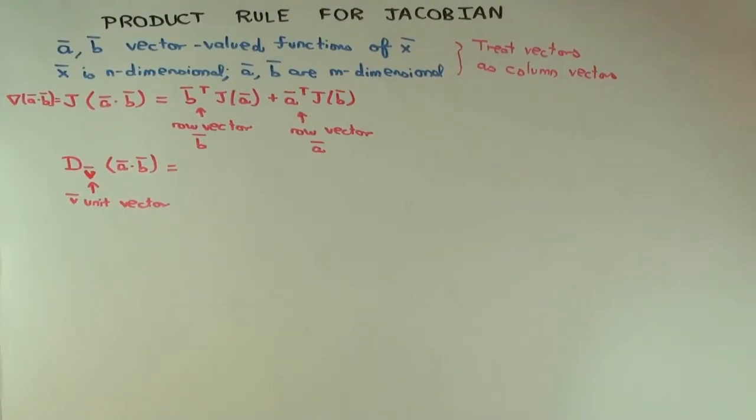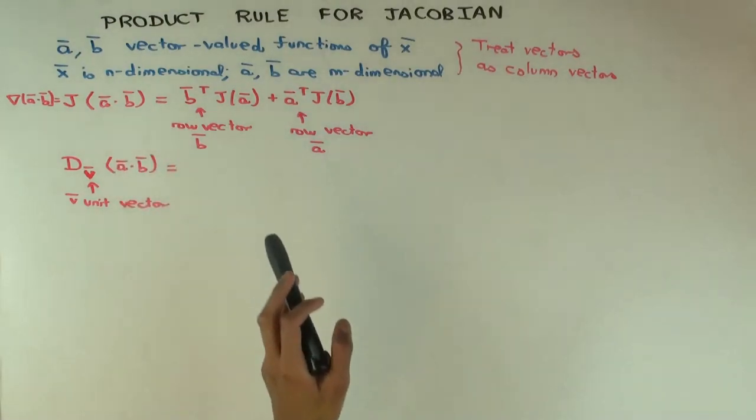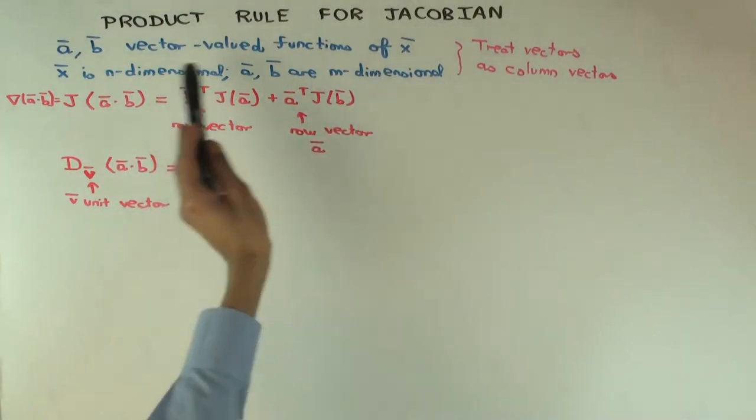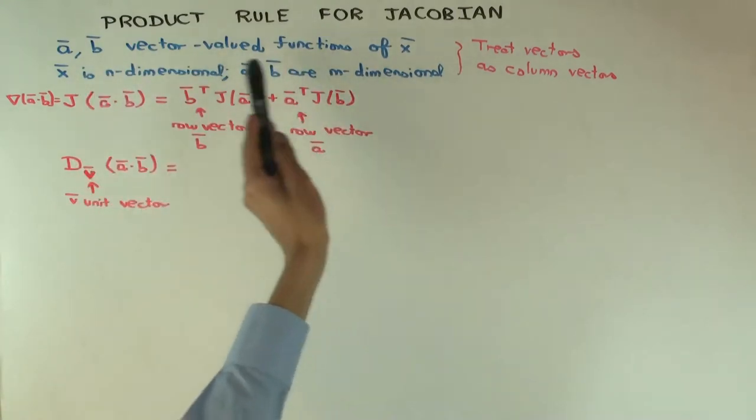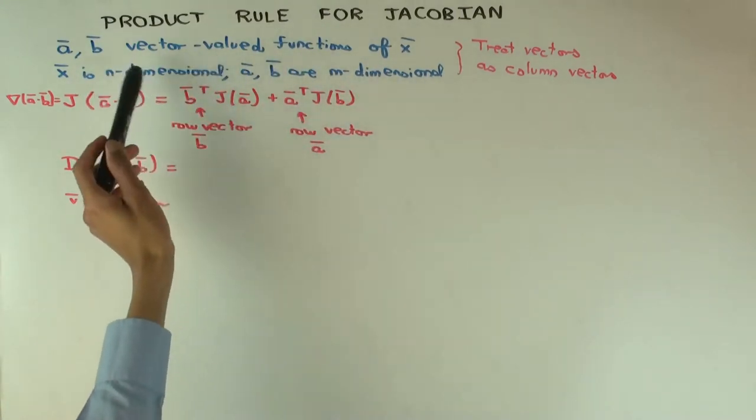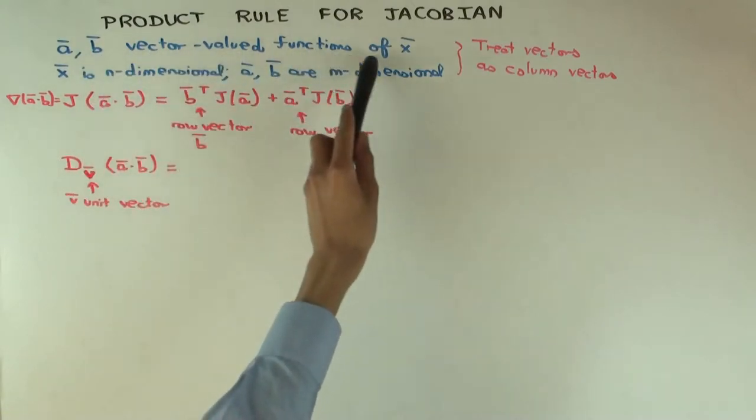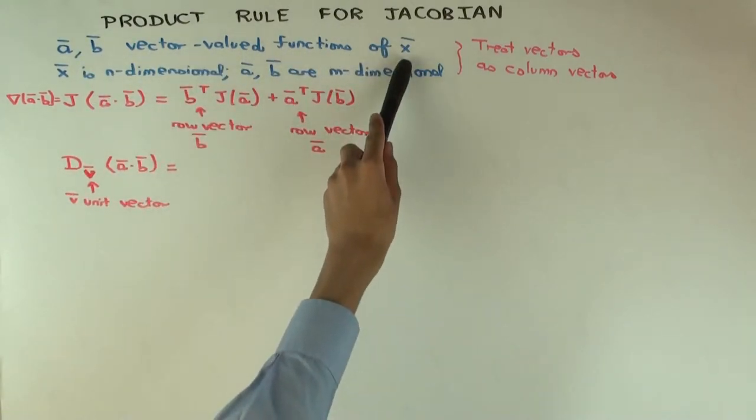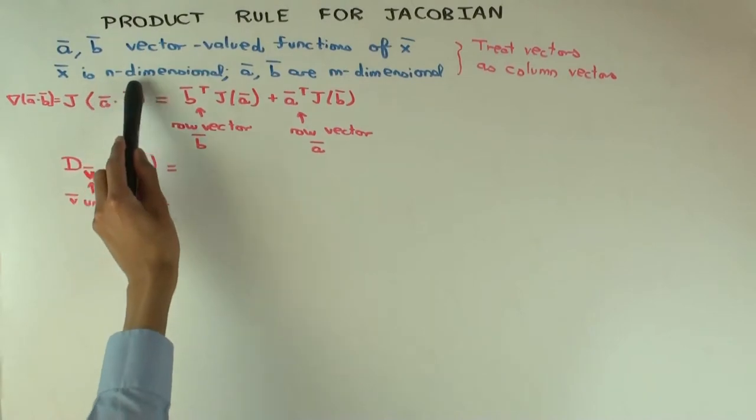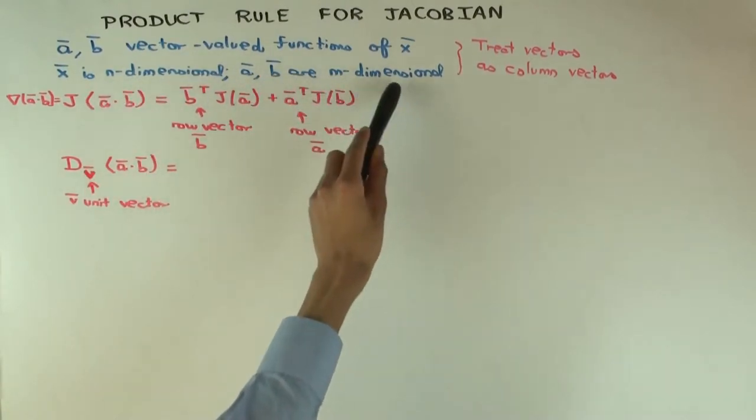Okay, so in this talk I'm going to talk about the product rule for the Jacobian and some applications of that. I'm going to use vector notation just because I don't want to write lots of coordinates. So a and b are both vector valued functions of a vector variable x, where x is n dimensional and a and b are m dimensional.